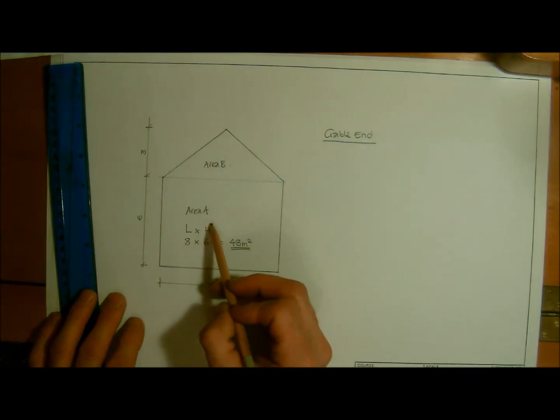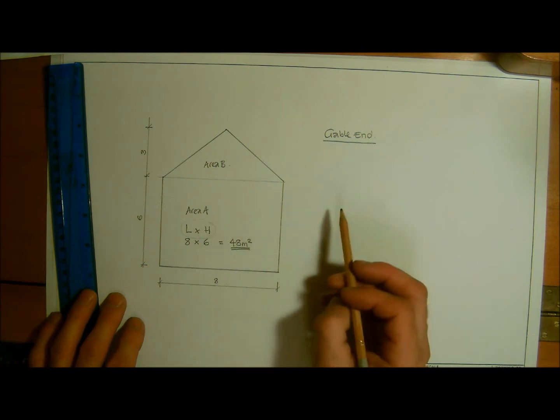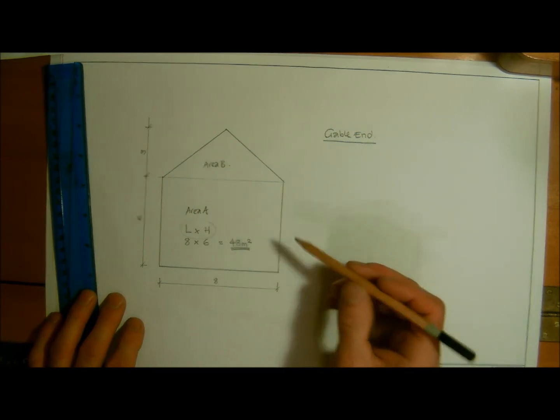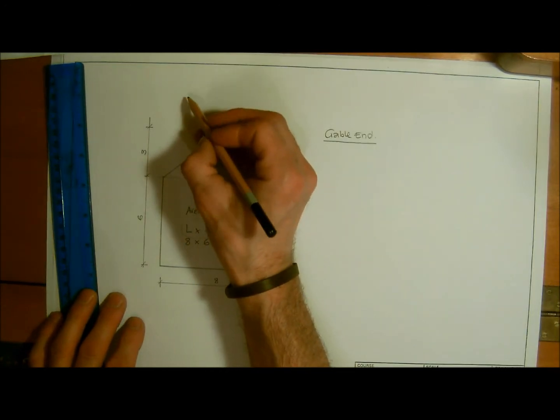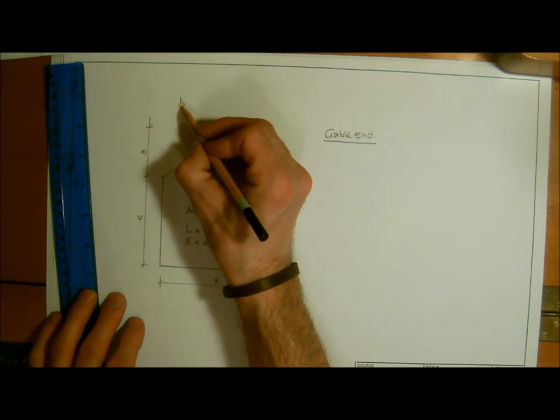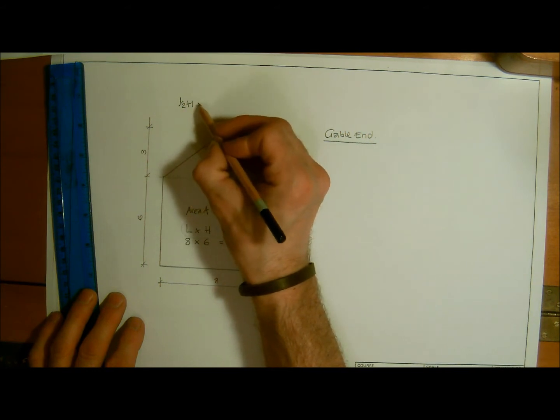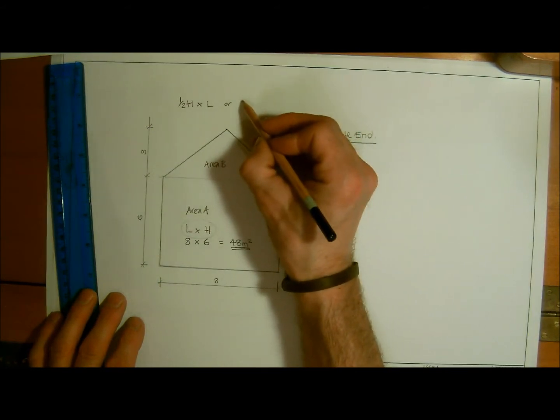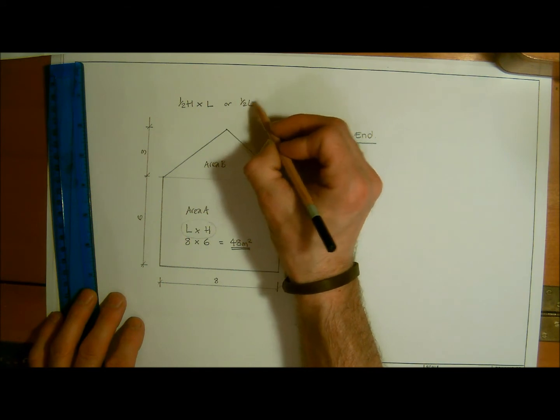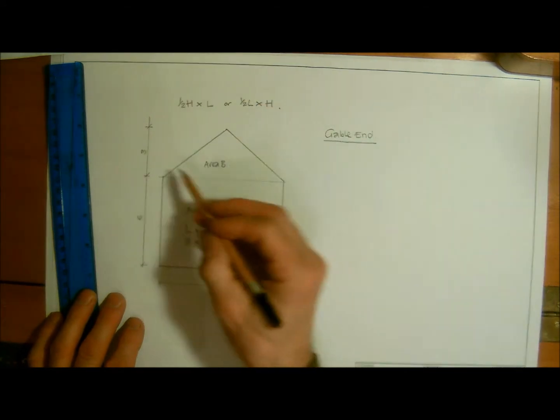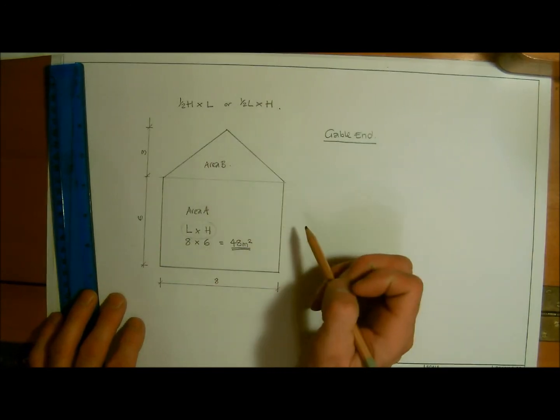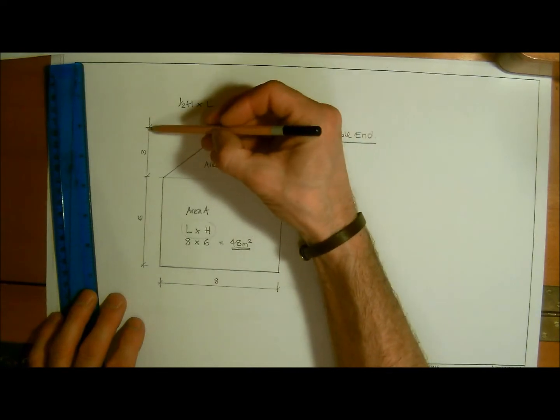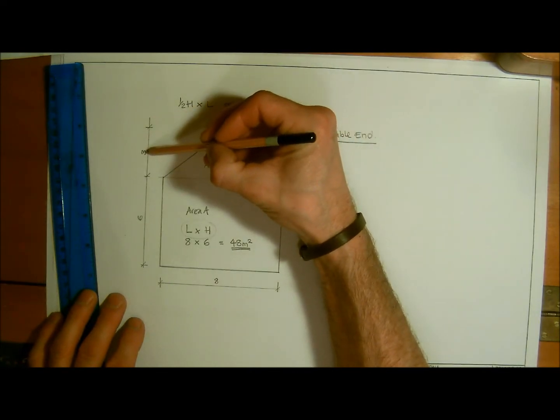Now this one, the formula we have is different. Although we're looking for a surface area, we're looking for a different formula. That is either half the height multiplied by the length, or half the length multiplied by the height. Doesn't matter which way you half it, but one of the dimensions you're going to have to half.